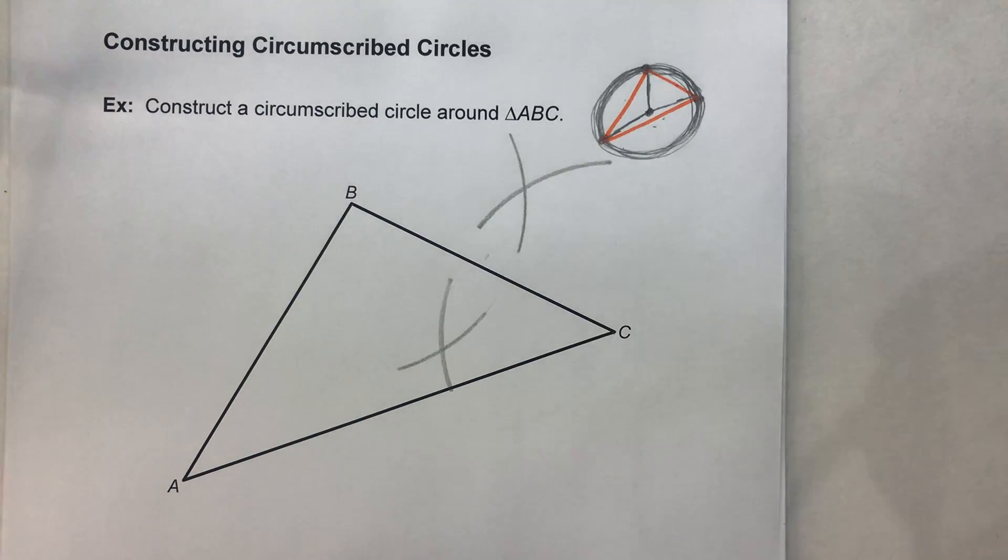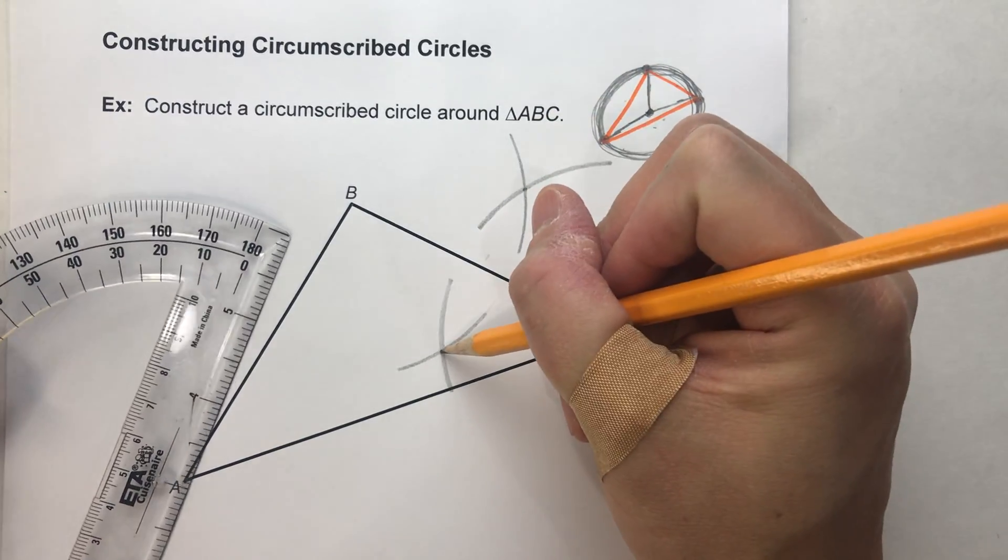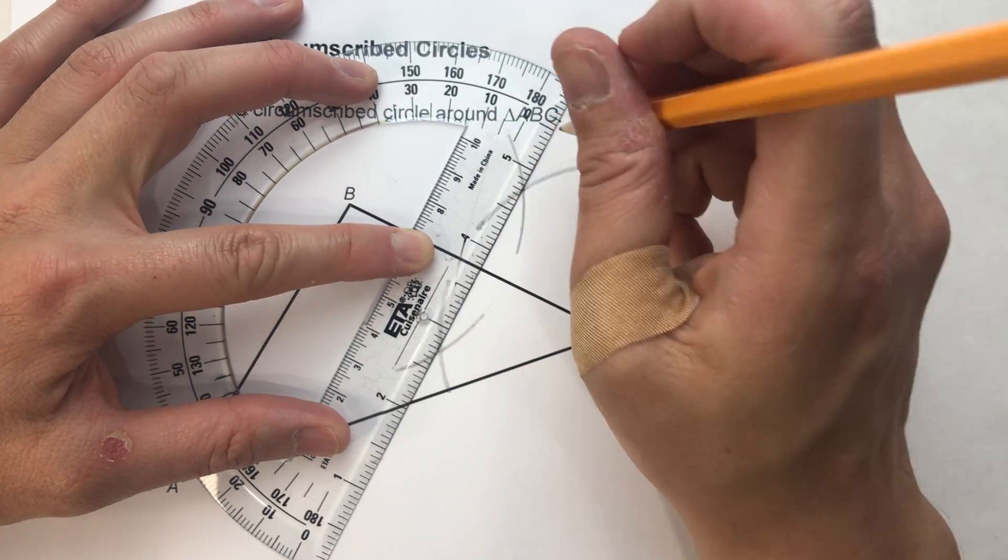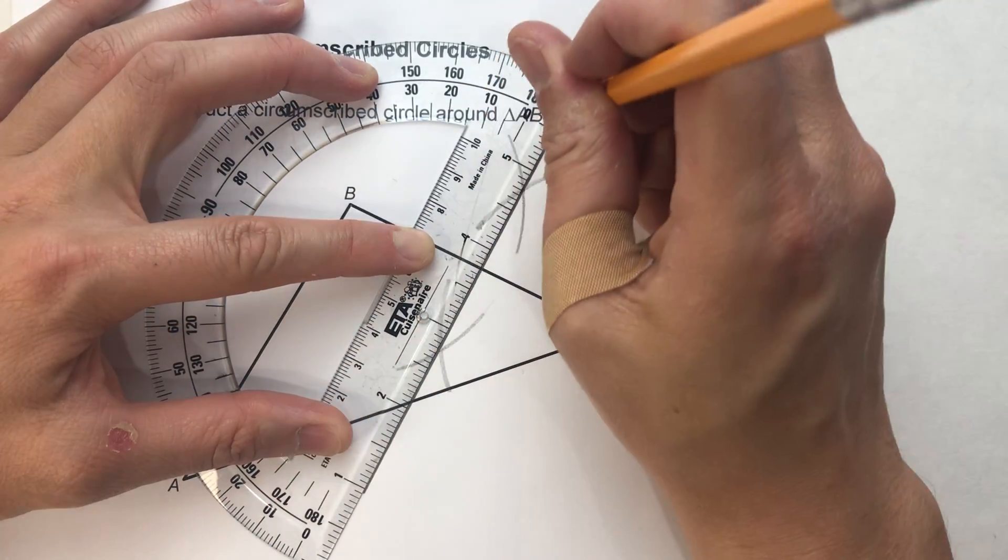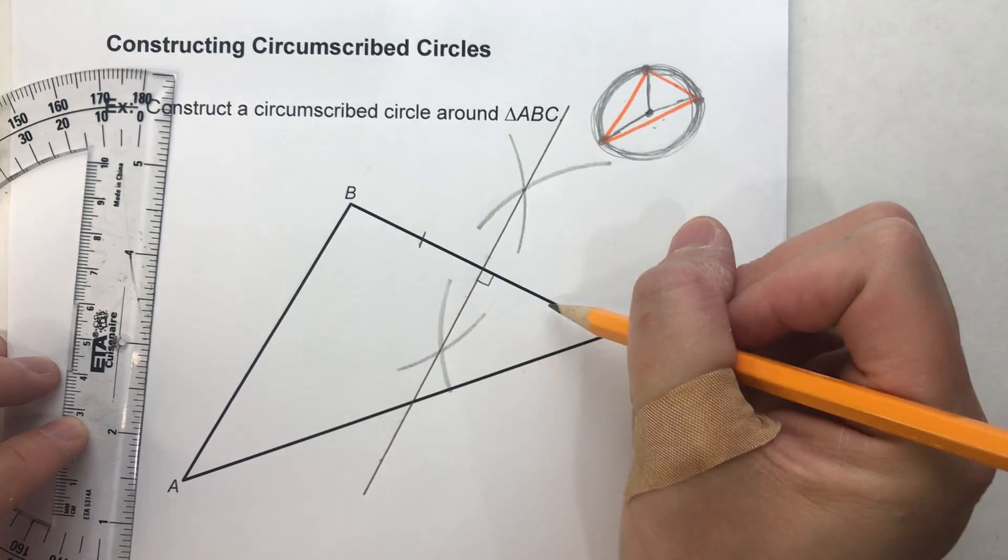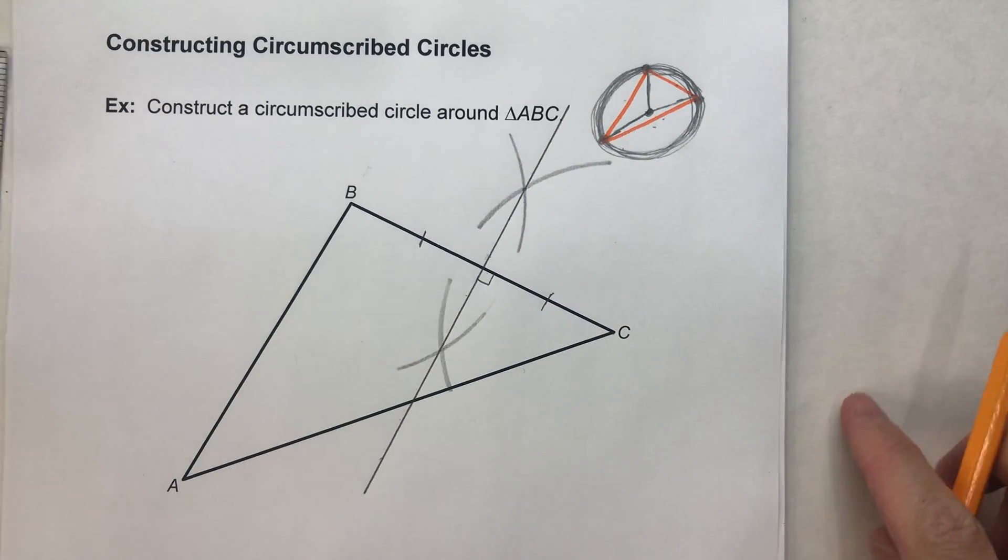And where the two arcs intersect, here and here, will determine my perpendicular bisector. There it is. Perpendicular bisector number one. Done.